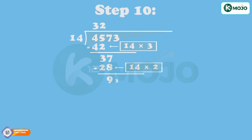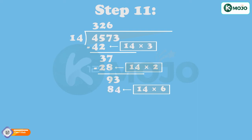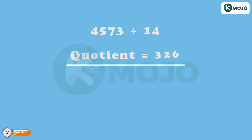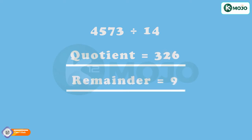Step 10: Bring down 3 making 93. Step 11: Divide 93 by 14. 14 goes 6 times in 93, i.e., 14 into 6 is equal to 84. Step 12: Subtract to get 93 minus 84 is equal to 9 as the remainder. Hence, 4573 divided by 14 gives quotient 326 and 9 as the remainder.